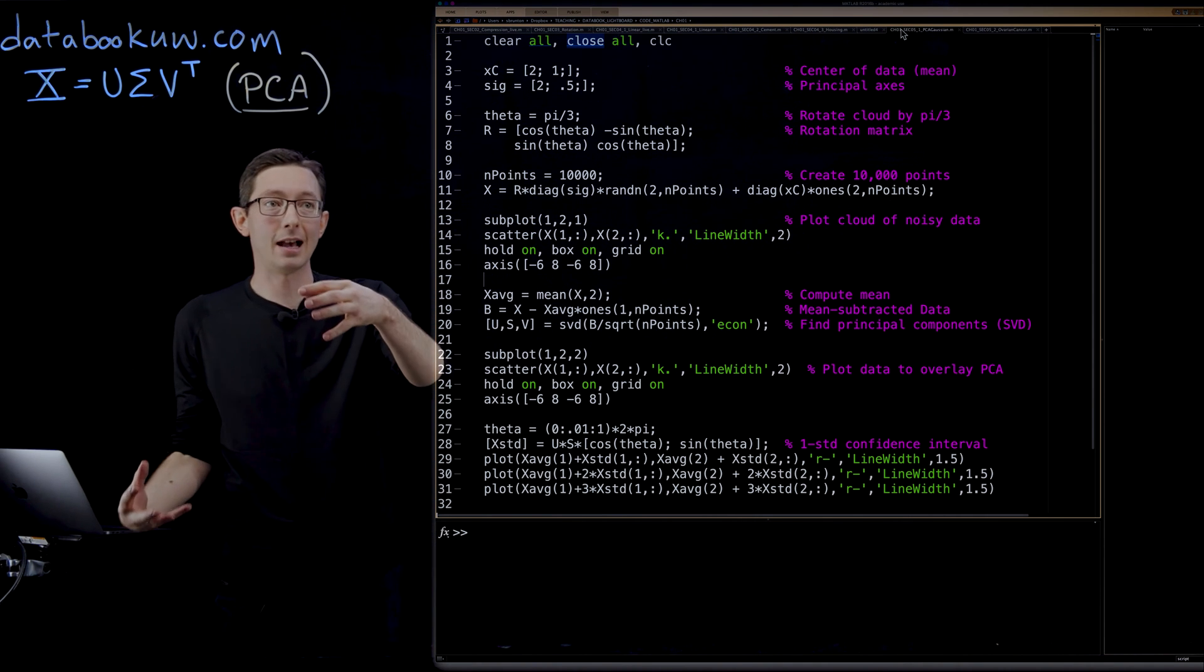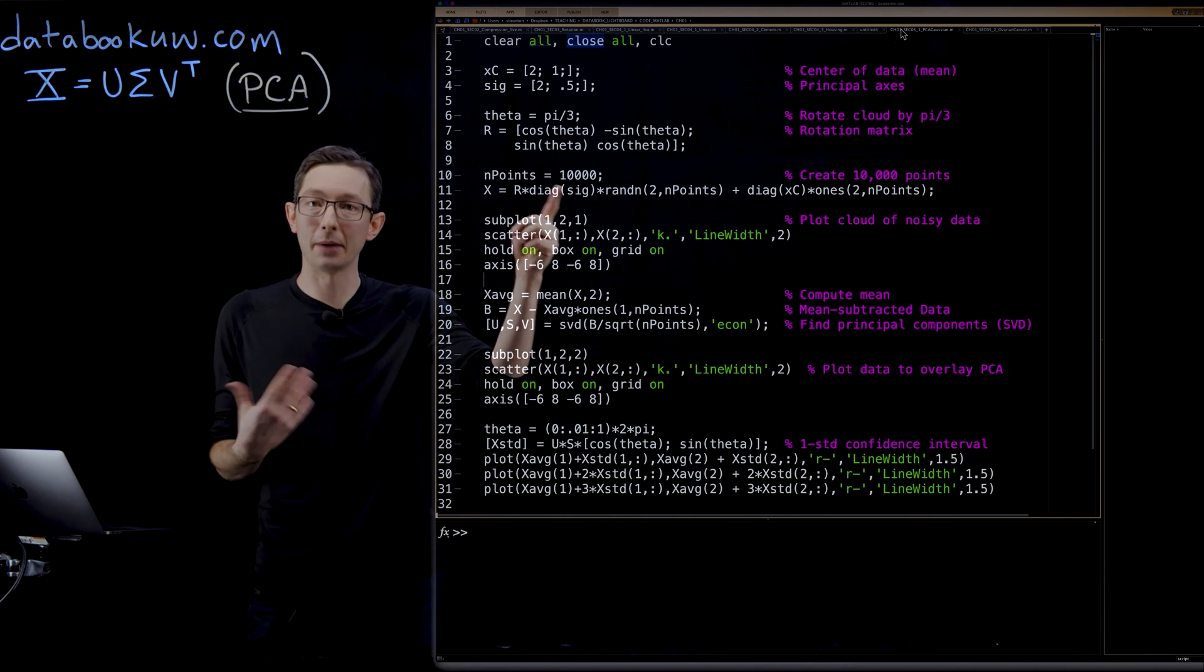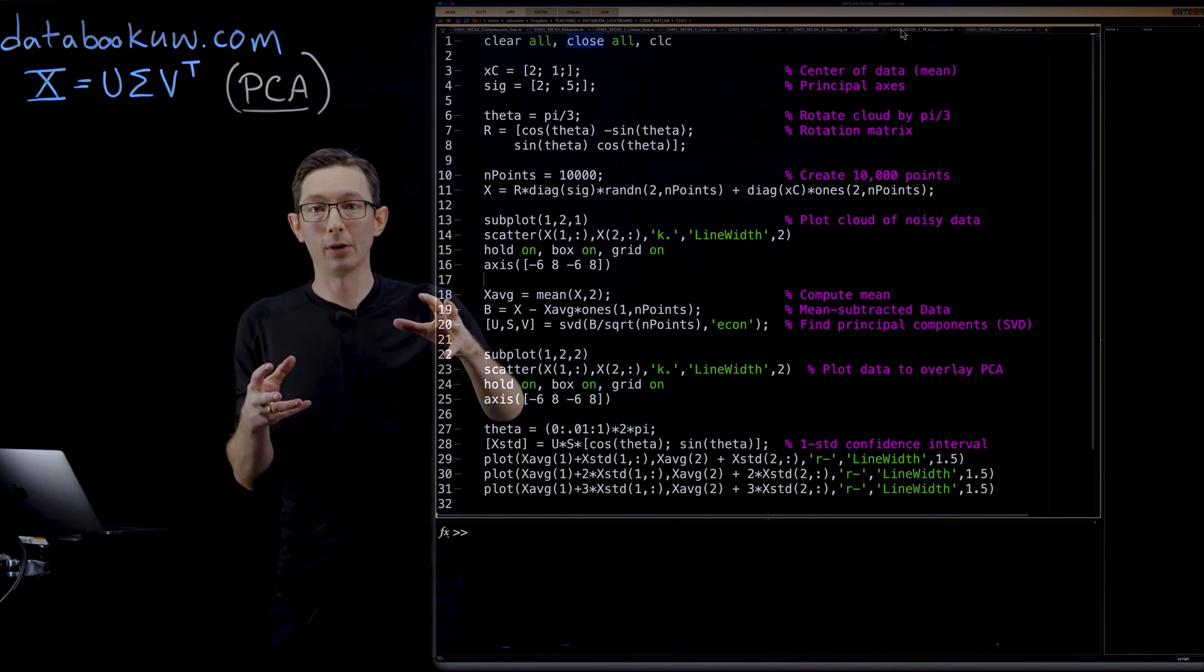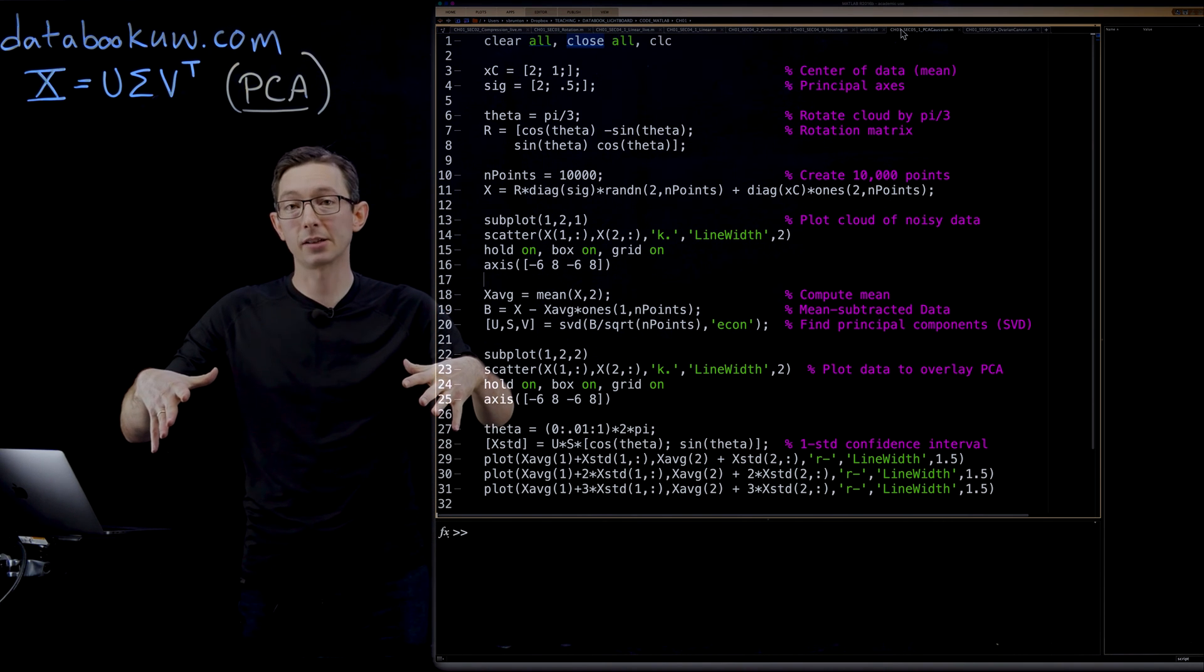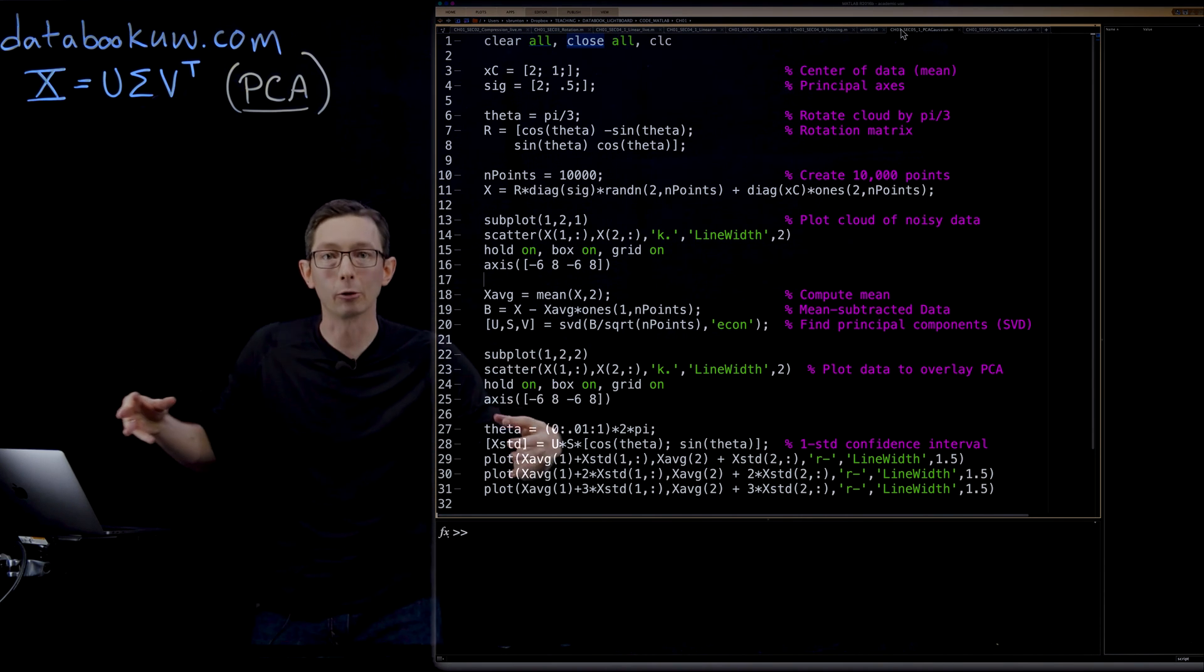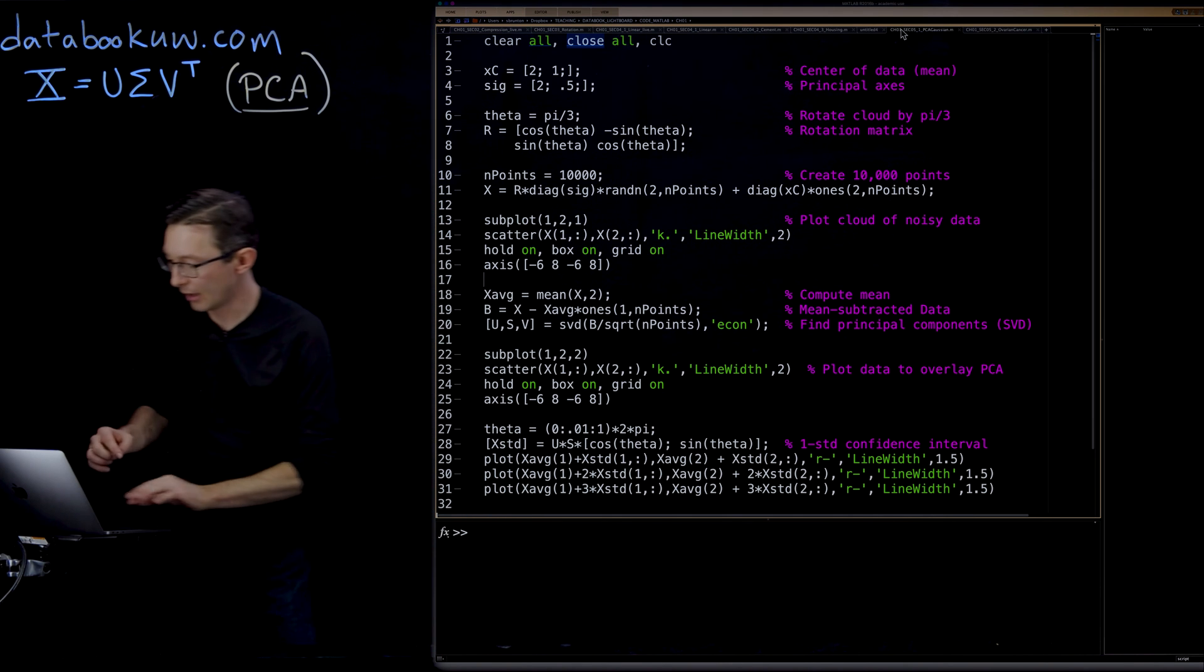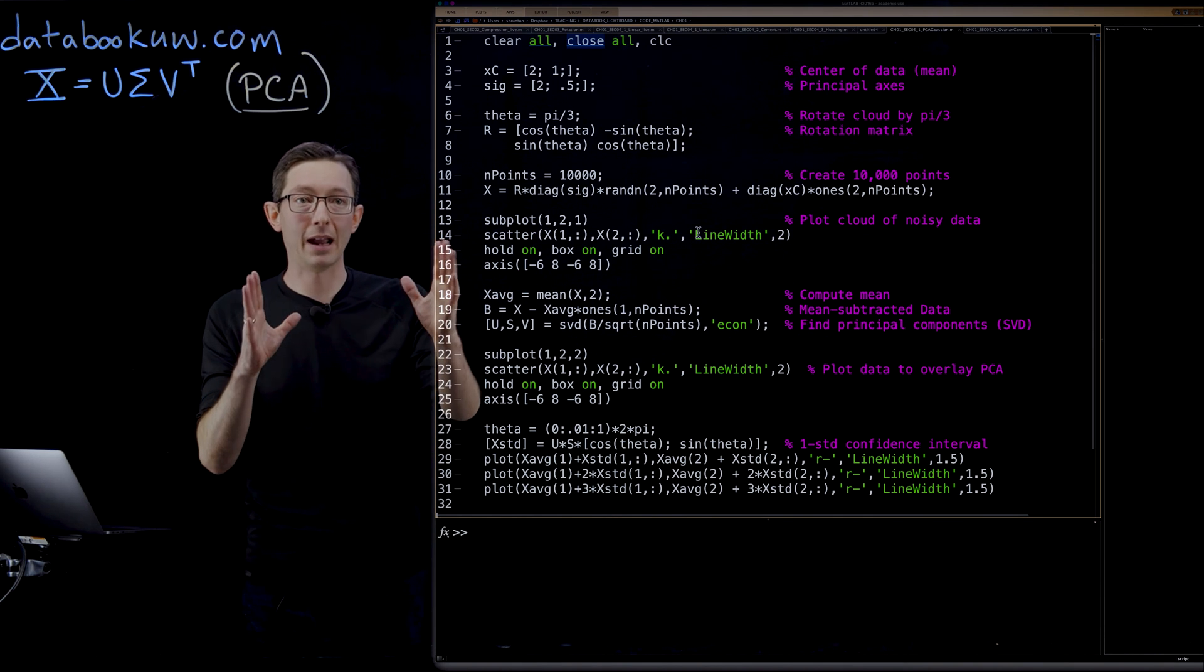Then I'm going to rotate this cloud by an angle of pi over 3. I'm going to have 10,000 points in my cloud, and I'm going to generate all of this. So the first thing I'm going to do is build a big, random, normally distributed cloud of Gaussians, this big Gaussian cloud in x1 and x2. Then I'm going to stretch it according to sigma, I'm going to rotate it according to r, and I'm going to center it, move it centered according to xc. And then I'm going to plot that cloud of noisy data for you in the first panel.